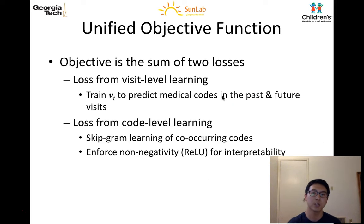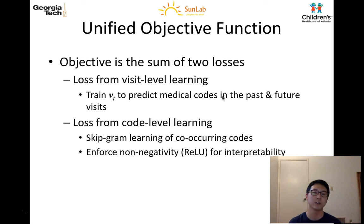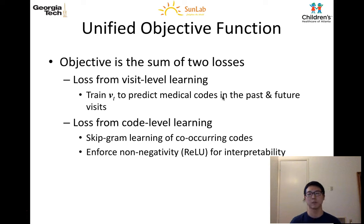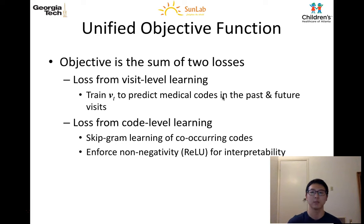Our objective is the sum of two losses. The first loss comes from visit-level learning, where we train VT, the visit representation, to predict medical codes in the past and future visits, or the neighboring visits. The second loss comes from code-level learning, where we use skip-gram to leverage the co-occurrence information of the codes, and we enforce non-negativity using ReLU for coordinate-wise interpretability.